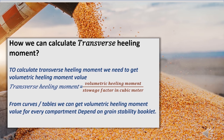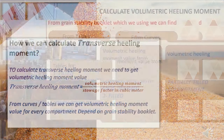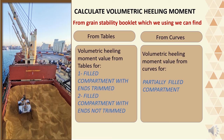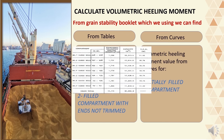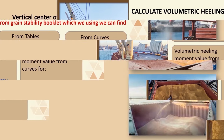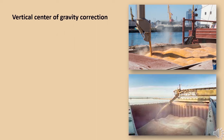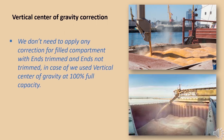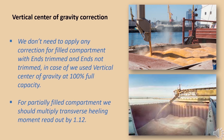From curves or tables, we can get the volumetric heeling moment depending on our grain stability requirements for our ship. From the grain stability booklet we browsed together in a previous lecture, we can get the value for filled compartments from tables and the value for partially filled compartments from curves. For vertical centre of gravity correction, we don't need to apply any correction for filled compartments trimmed or untrimmed when we use vertical centre of gravity at 100% full capacity. For partially filled compartments, we should multiply the transfer heeling moment readout by 1.12.